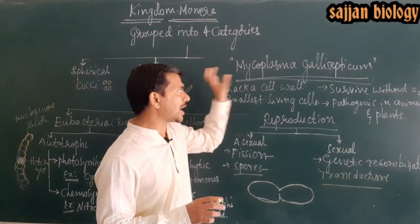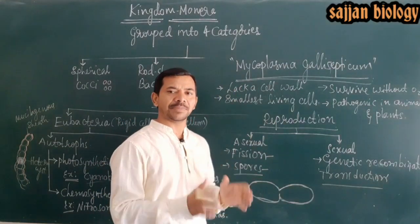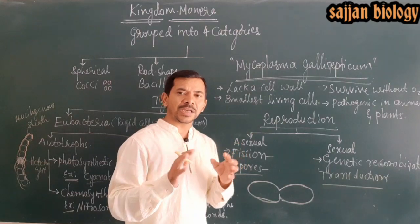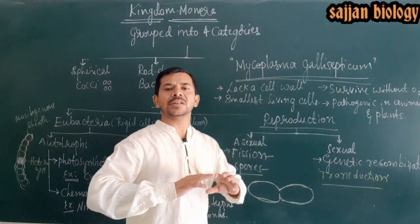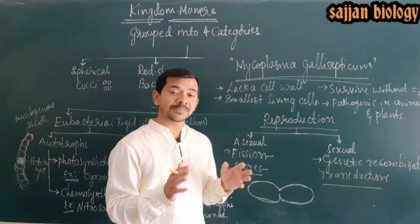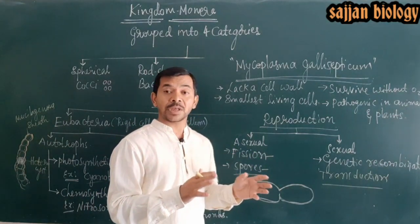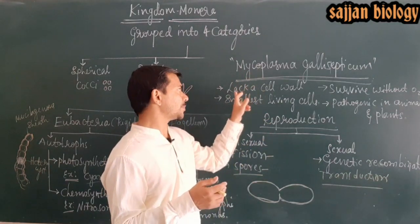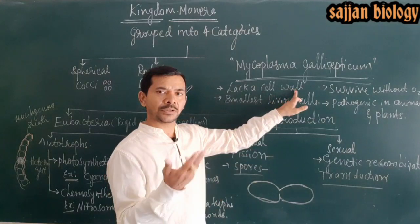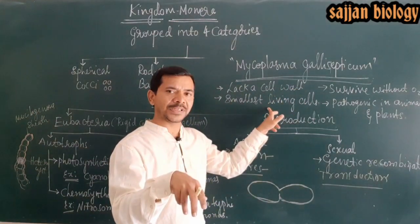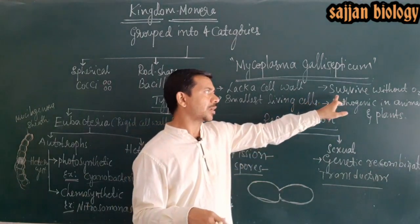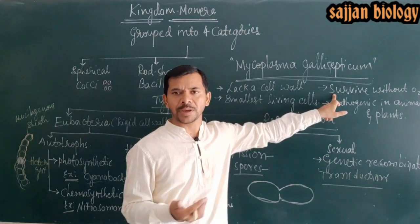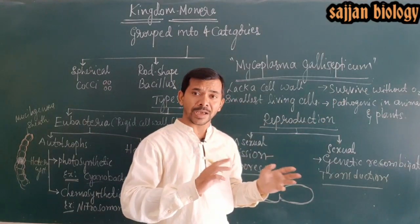The last part covers Mycoplasma gallisepticum, the smallest living organism. It completely lacks a cell wall and can survive without oxygen — it is an anaerobic bacterium. These organisms are highly pathogenic to both animals and plants.